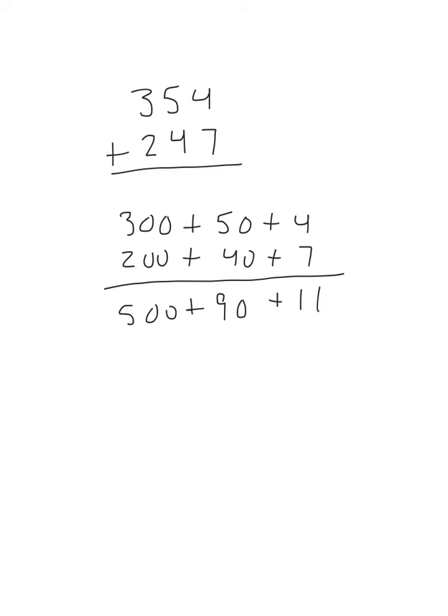So when we add it all up, we're left with an answer of—well remember, 90 plus 11 would be 101, so 500 plus 101 would be 601.